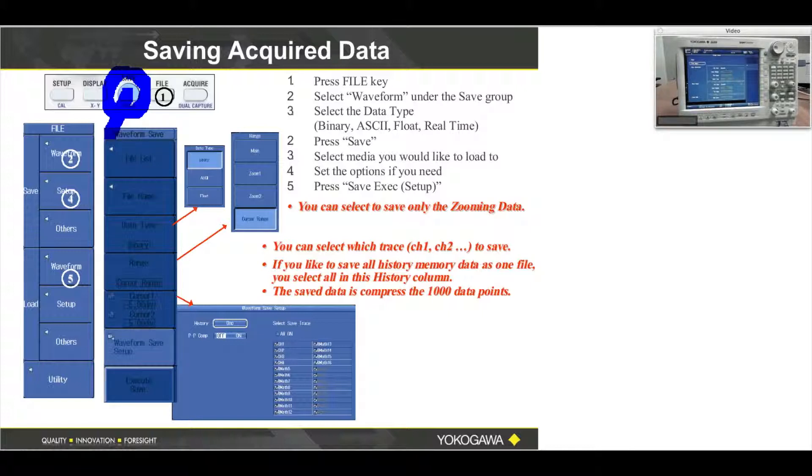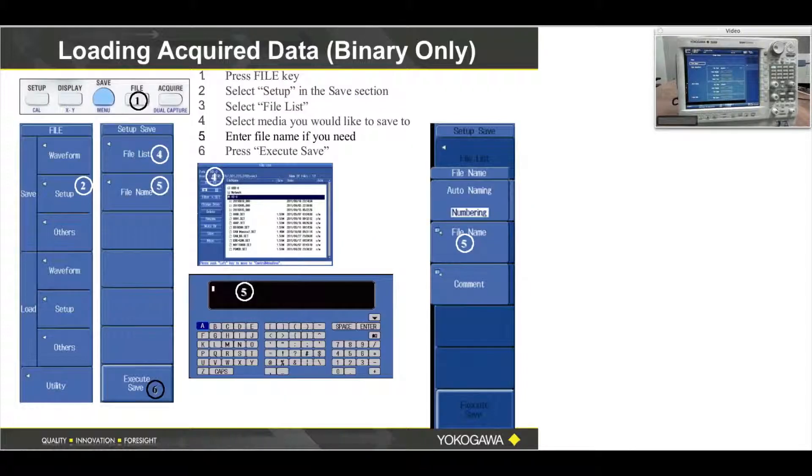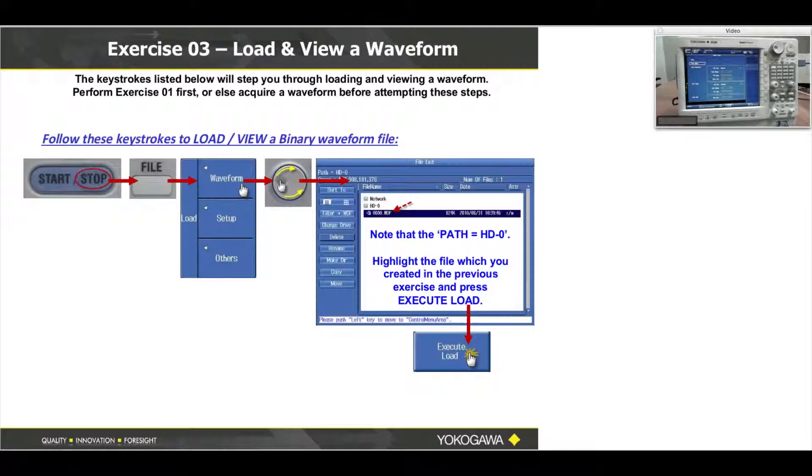File button always requires several keystrokes or buttons, but it also is more powerful—it gives you more options and more choices as you save your acquired waveform. We also loaded a binary file earlier, and in this exercise here, we actually first save the file, and then you're going to load and view the waveform.